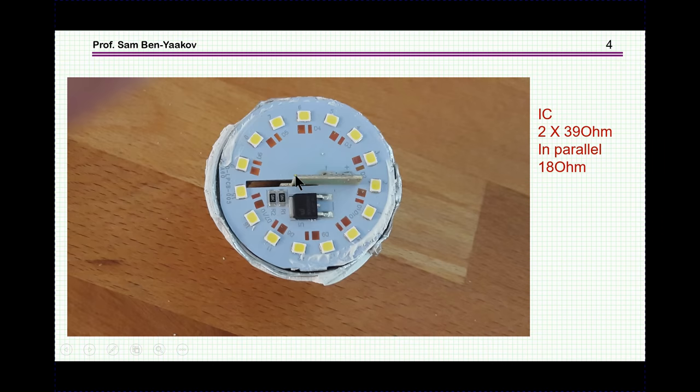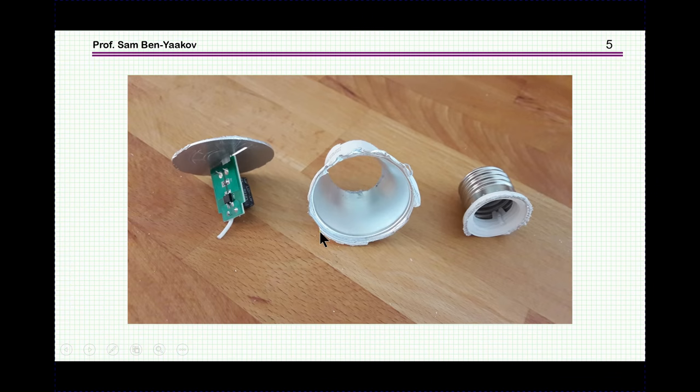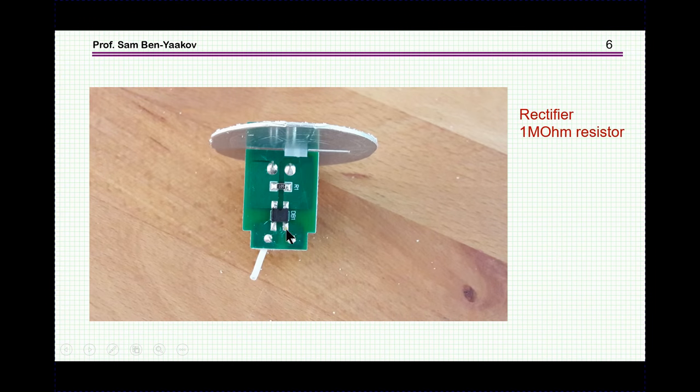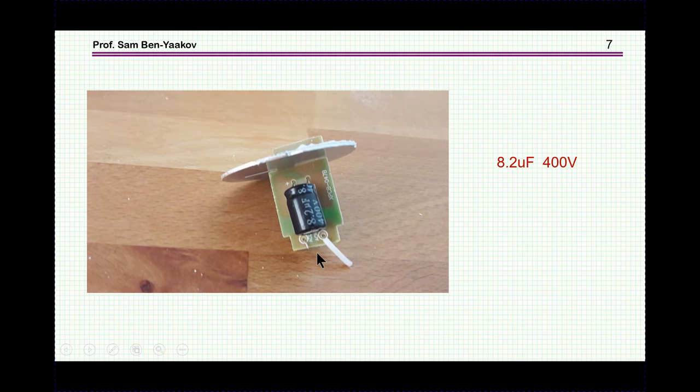As you can see there's a PCB here, and indeed if I open it, there's a little PCB here. Let's have a look at it. On one side there is a rectifier and also a resistor of one megaohm. Here it is. And on the other side there is an 8.2 microfarad capacitor, 400 volts, and this is apparently for the voltage after rectification of the 220 volts.